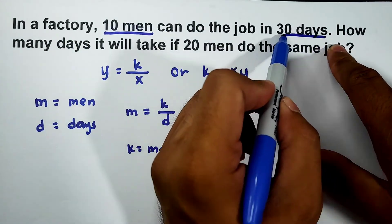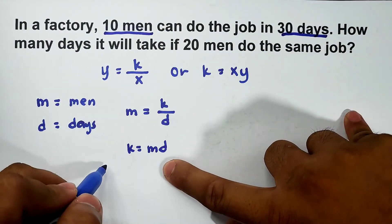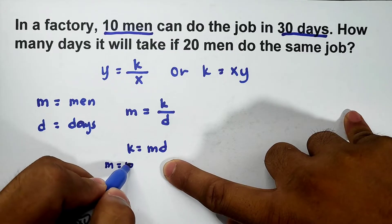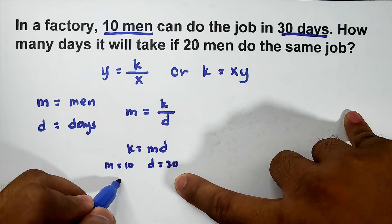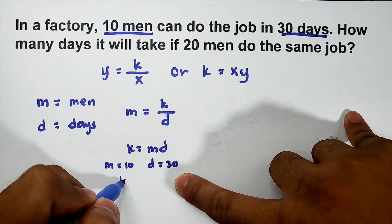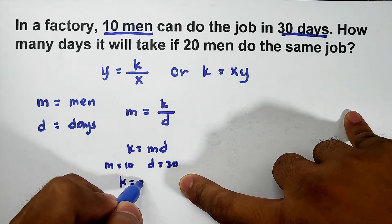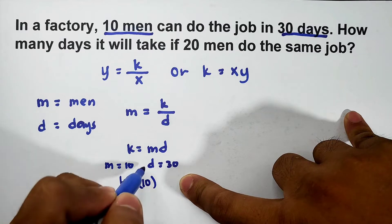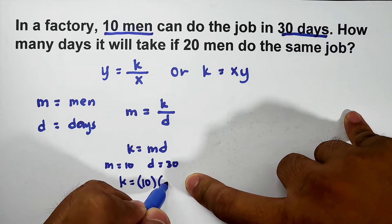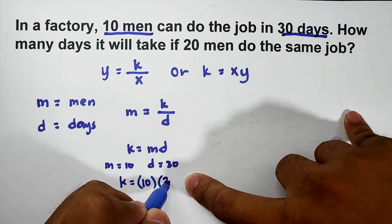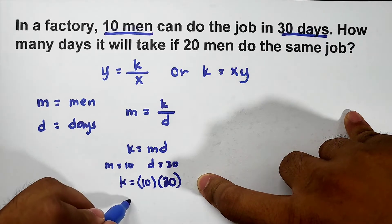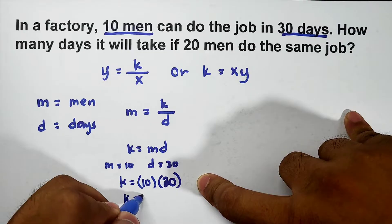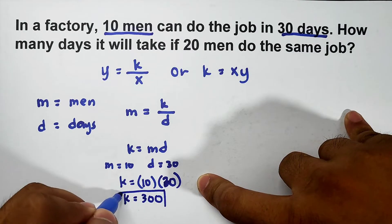...can do the job in 30 days. Ibig sabihin nyan, your m = 10, your d = 30. So to solve for k, for the constant of variation, k = 10 × 30. 10 times 30 is 300, meaning your k = 300. So you're done with the constant of variation.